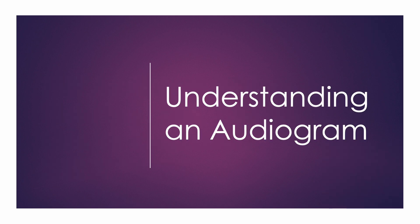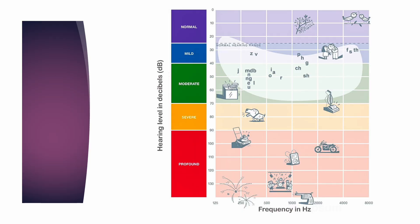We're going to start by breaking down the parts of an audiogram. By understanding what hearing loss looks like, we'll have an easier time understanding why it impacts cognition. This is an audiogram — this is how audiologists plot hearing sensitivity. On the y-axis, or from top to bottom, we have hearing in decibels. For our purposes, we can understand decibels as volume. At the top are very soft sounds, and at the bottom are very loud sounds.